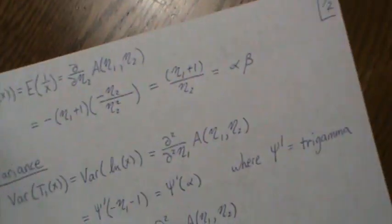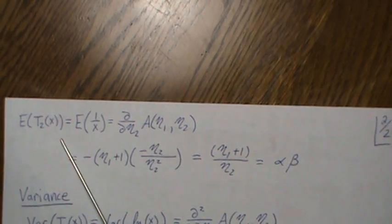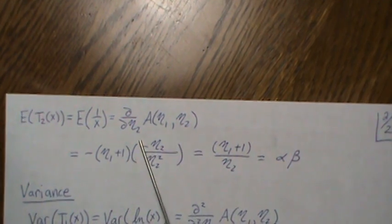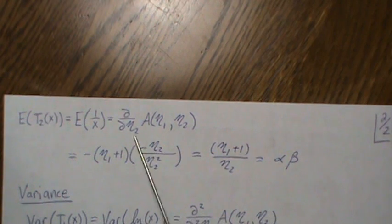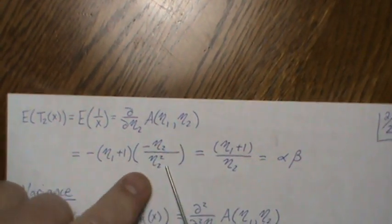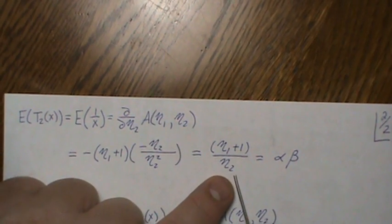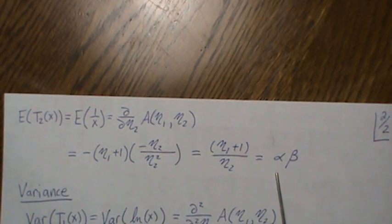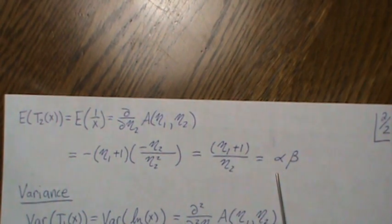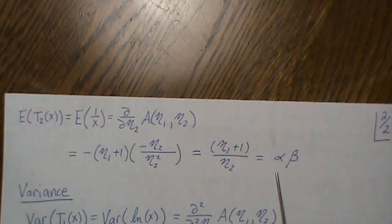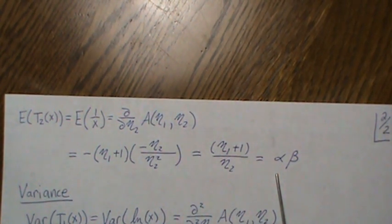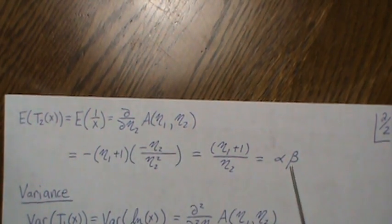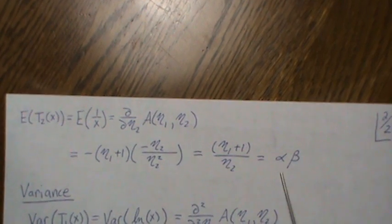The expected value of the second sufficient statistic, E[1/x], is the partial derivative of the log partition with respect to η₂. Taking that partial and simplifying gives (η₁ + 1) / η₂². Plugging in η₁ = -(α+1) and η₂ = -1/β, we get α·β. That's so satisfying — because the reciprocal of an inverse gamma is a gamma distribution, so 1/x follows a gamma distribution, and the mean of a gamma distribution is α·β, as it should be.